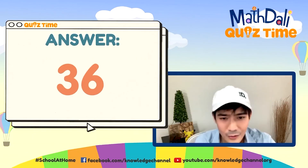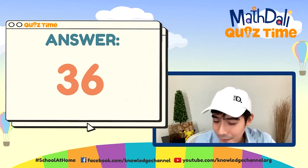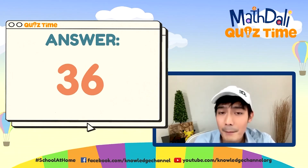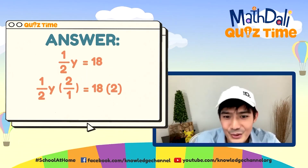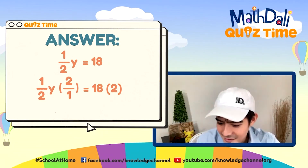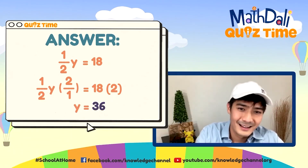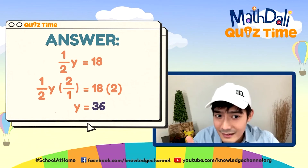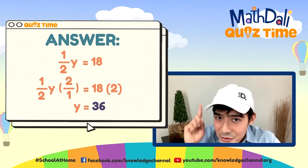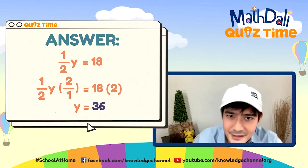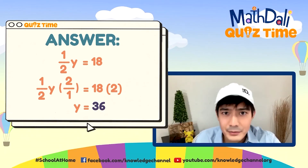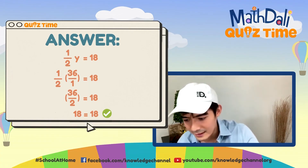Paano ba natin ito nakuha? To isolate Y, we will multiply 2 sa both sides ng ating equation. 18 times 2 will give us 36. Let's check — substitute natin ng 36 sa value ng Y. 36 over 2, or times 1/2, will give us the same result — 18 din. Good job!